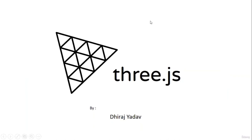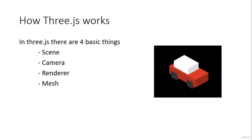Hello everyone. Welcome to this lecture. In this lecture, we are going to learn how Three.js works. We are going to discuss some introduction to Three.js — not the practical work; in upcoming lectures we'll see everything by writing code. So there are four basic things required in Three.js to create output: scene, camera, renderer, and mesh.